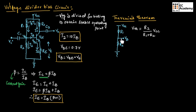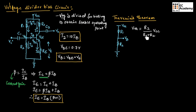The voltage between Vb and ground is taken as Vth. Vth equals the resistor in the branch where we are finding the voltage, divided by the sum of the resistances, multiplied by the source voltage. So we can replace the input with a single voltage source equal to (R2 / (R1 + R2)) × Vcc.